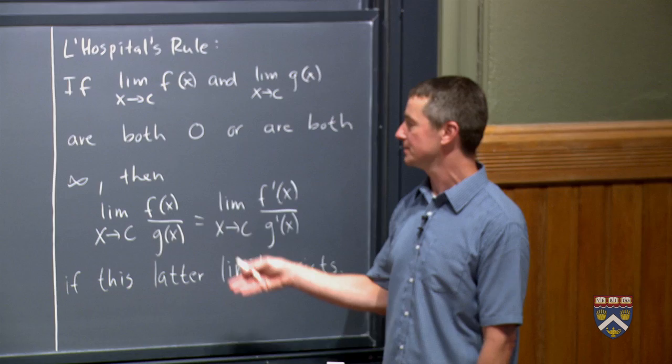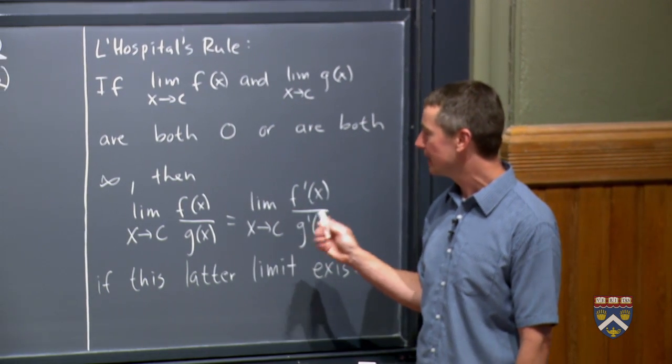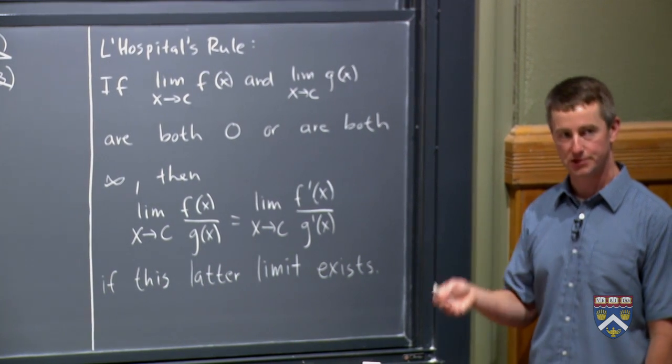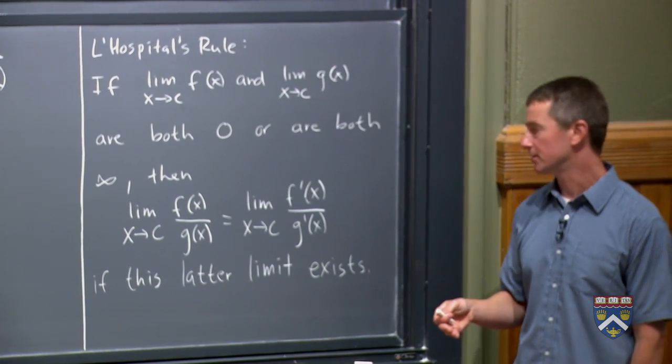So if we get 0 over 0 or we get infinity over infinity from this, what this argument tells us and what the applet we hope helped you see is that the ratio of the y values should be the same as the ratios of their slopes. That is to say, the ratios of their derivatives.